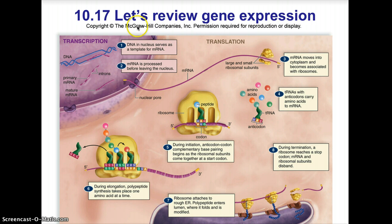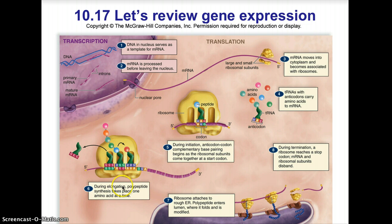Here you can see the overall review of gene expression. The DNA in the nucleus serves as the template for messenger RNA. Messenger RNA is processed before leaving the nucleus — that is transcription. As the messenger RNA leaves through the nuclear pore, it binds to the small and large ribosomal subunits and moves to the cytoplasm, becoming associated with the ribosome. tRNAs with anticodons carry amino acids to the messenger RNA. During initiation, anticodon-codon complementary base pairing begins as the ribosomal subunits come together at the start codon AUG. During elongation, polypeptide synthesis takes place one amino acid at a time. Eventually, the ribosome attaches to the rough ER and the polypeptide enters the lumen, where it folds and is modified. Termination occurs when the ribosome reaches one of the three stop codons, and the messenger RNA and ribosomal subunits are disbanded from each other.